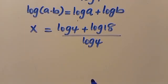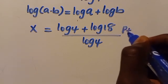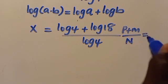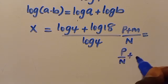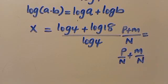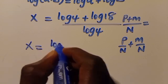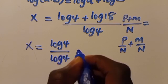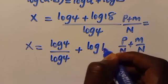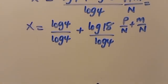Now we recall that when we have a sum (p plus m) over n, this equals p over n plus m over n. Applying this rule, we split the fraction to get log 4 over log 4 plus log 18 over log 4.